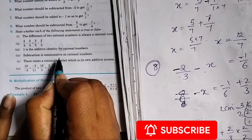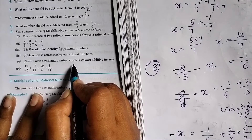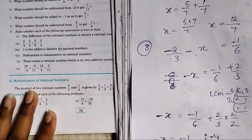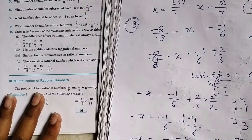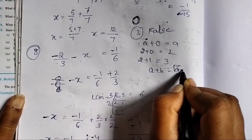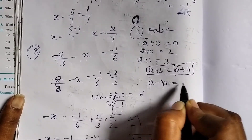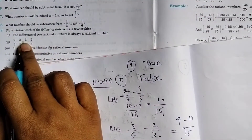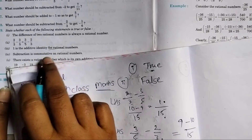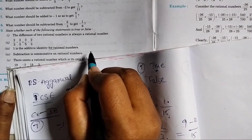Fourth statement: subtraction is commutative on rational numbers. Recall the commutative property: a plus b is equal to b plus a — that is for addition. But in subtraction, a minus b is not equal to b minus a. This condition fails for subtraction. Therefore, subtraction is not commutative on rational numbers, and the fourth statement is false.